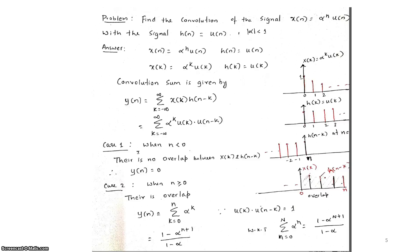So the final answer is: y(n) = 0 when n < 0, and y(n) = (1 - α^(n+1))/(1 - α) when n ≥ 0. There are three types of convolution problems: the first involves two infinite signals, the second involves one finite and one infinite signal, and the third involves both finite sequences. When both signals are infinite there are generally two conditions to consider.